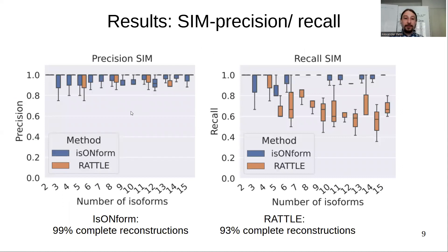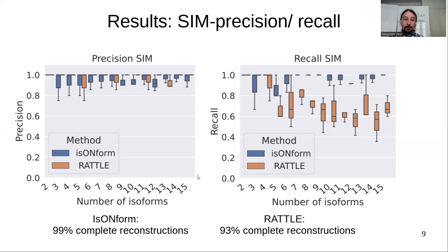Here you can see the results of this analysis. On the x-axis we have the number of isoforms, and on the y-axis we have the precision and recall values. Both tools have almost perfect precision, with RATTLE being slightly closer to perfect than IsoNForm. However, for recall, IsoNForm is still almost perfect, while RATTLE with a higher number of isoforms is not able to find all transcripts. IsoNForm achieved 99% complete reconstructions, while RATTLE achieved only 93%.